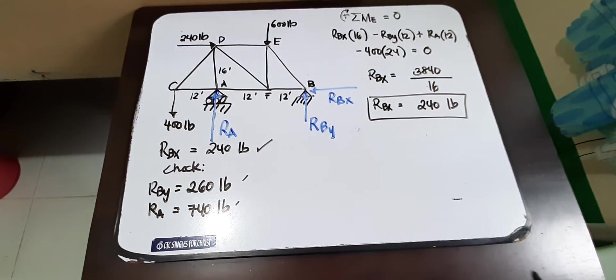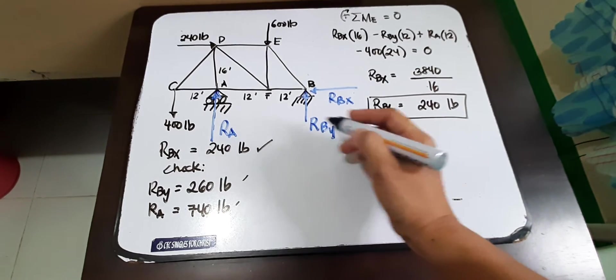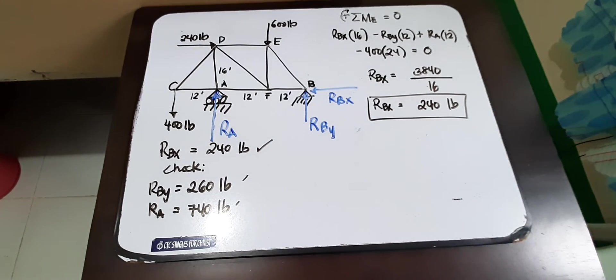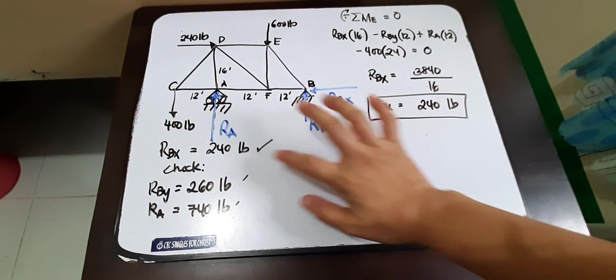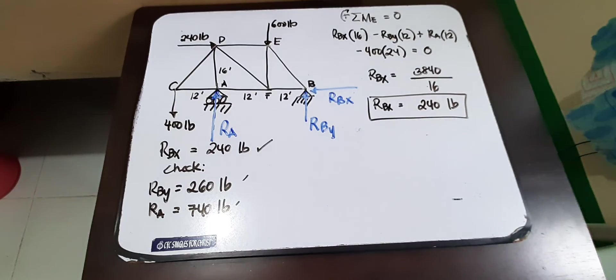So we now have our final answers. So RBX is 240, RBY is 260, and our reaction at A is 740 pounds. So we have checked the assumption of our RBX which is equal to 240. So that would be all.